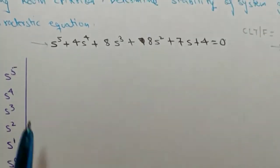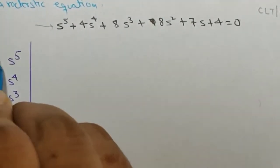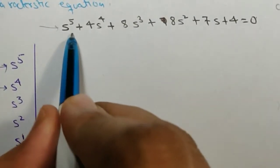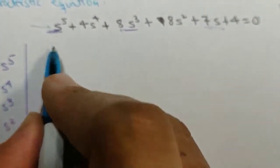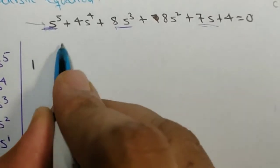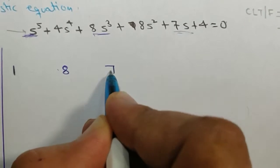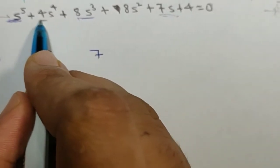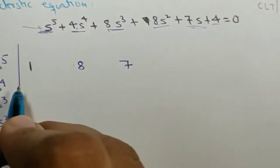Now we have drawn the Routh array. We fill only the first two rows. For the s^5 row we put alternate coefficients starting from s^5: the values are 1, 8, 7. For the s^4 row we put alternate coefficients starting from s^4: the values are 4, 8, 4.